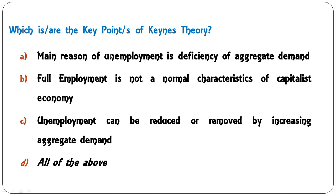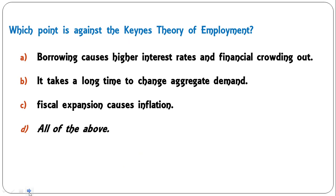Which are the key points of Keynes' theory? First, main reason of unemployment is deficiency of aggregate demand — correct. Second, full employment is not a normal characteristic of capitalist economy — also correct. Third, unemployment can be reduced by increasing aggregate demand — also correct. So the correct answer is all of the above.